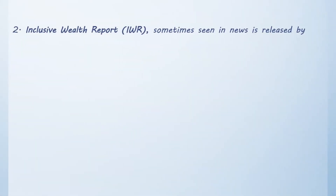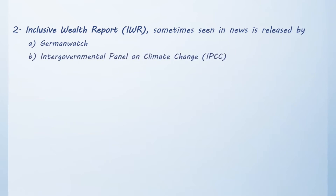Moving on to the next question: the Inclusive Wealth Report, sometimes seen in news, is released by which of the following? Option A: Germanwatch. Option B: Intergovernmental Panel on Climate Change. Option C: UN Environment. Option D: World Bank. The correct answer is Option C, UN Environment.